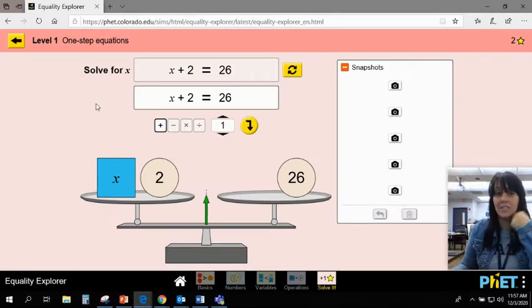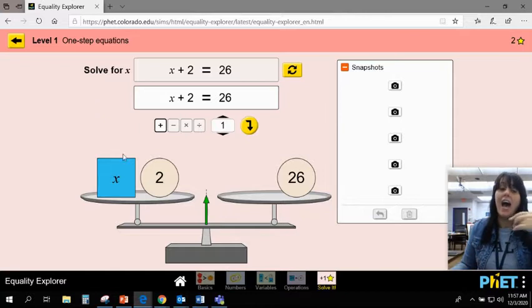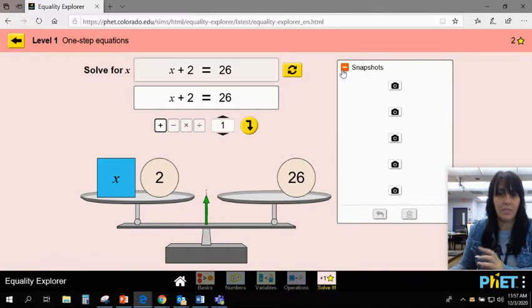Here I have a problem: x + 2 = 26. I can see the modeling down here. I can see where the x's are represented and where the constants are represented. I like this snapshot feature mainly because it helps me keep track of steps.